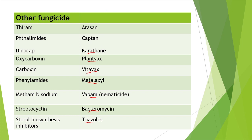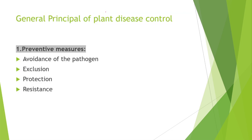Now the last topic is general principles of plant disease control. Preventive measures to control diseases include: avoidance of pathogen, exclusion, protection, and resistance. To prevent disease we can use disease-resistant seeds, do seed treatment, protect the plant, or avoid the pathogen. Next is therapy, a curative method including chemotherapy and thermotherapy — applying heat or chemicals. Surgery and pruning are also used.